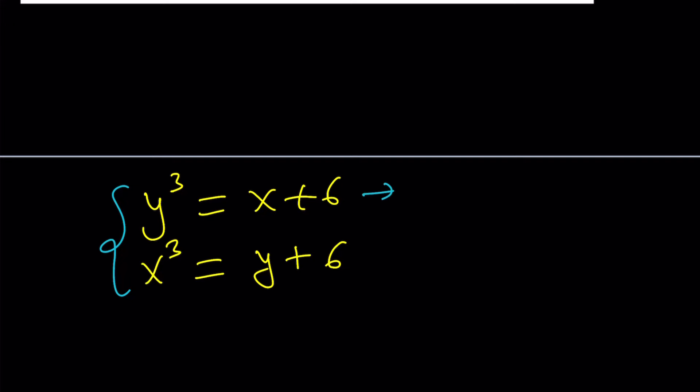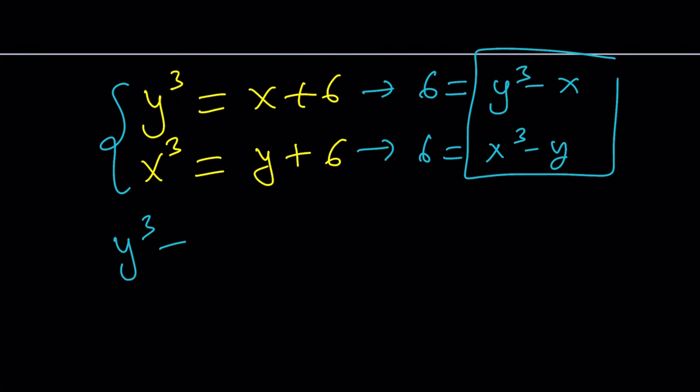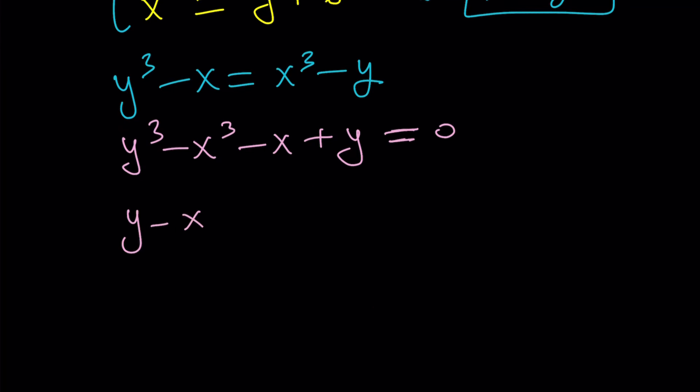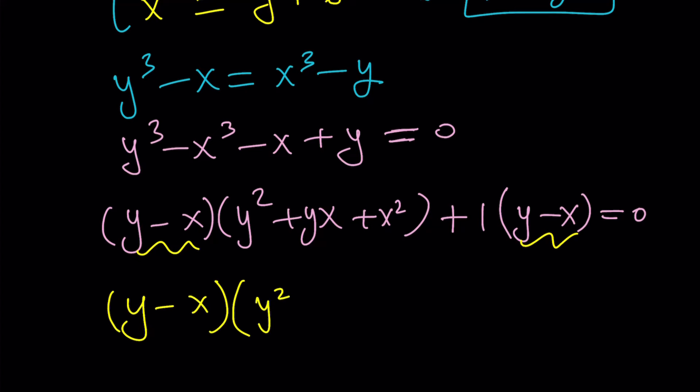I like isolating the 6s, so y cubed minus x is 6. And it can also be written as x cubed minus y. So these two things are equal, because they're equal to the same thing. So let's write it as y cubed minus x equals x cubed minus y. You see? It's what I meant by symmetry. Beautiful. Now, here's what we're going to do. We're going to put everything on the same side. So we're going to get y cubed minus x cubed minus x plus y equals 0. This looks like difference of two cubes. And let's go ahead and factor it. y minus x times y squared plus yx plus x squared. And then negative x plus y can be written as y minus x, which is 1 times y minus x. You see? y minus x is now a common factor.